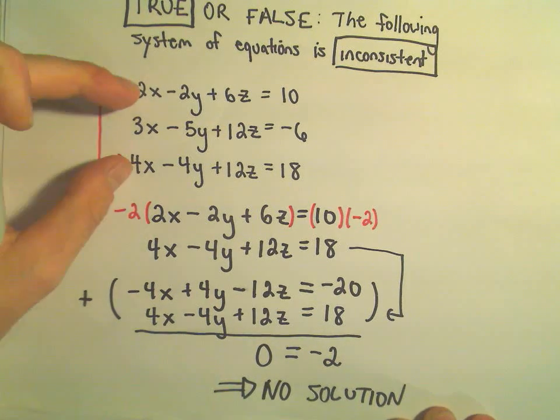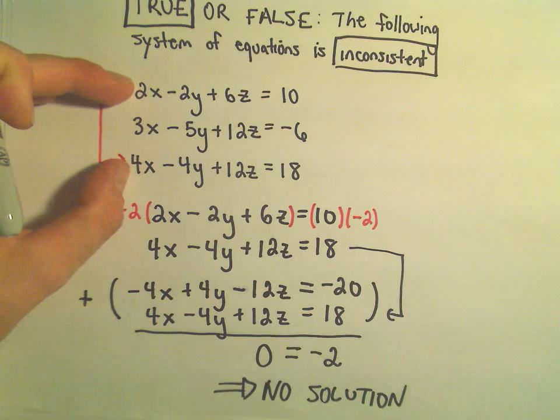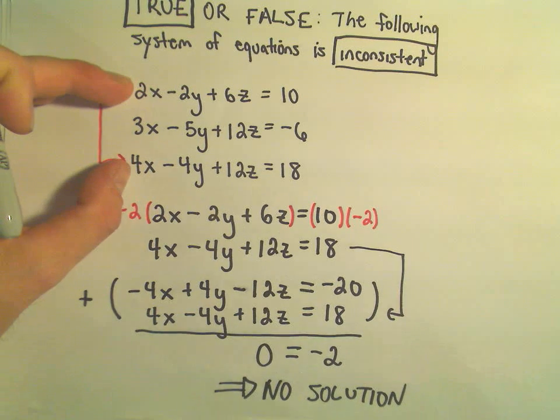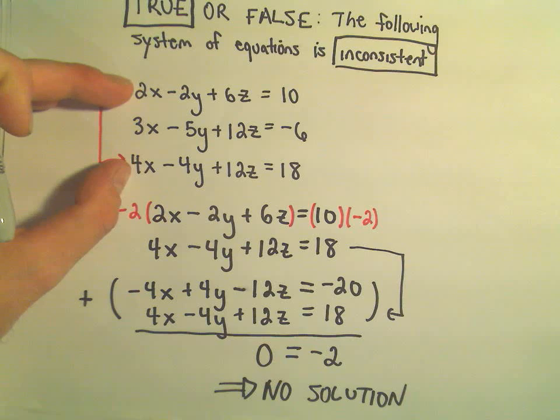So something like this, I could just look at, make that realization and be like, oh, there's not going to be any solutions to this system of equations. Therefore, it would be inconsistent.